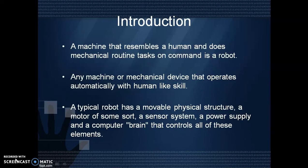First one is introduction. A machine that resembles a human and does mechanical routine tasks on command is a robot. Any machine or mechanical device that operates automatically with human-like skill is a robot. A typical robot has a movable physical structure, a motor of some sort, a sensor system, a power supply, and a computer brain which is a microcontroller that controls all these elements. So these are the components of a robot.